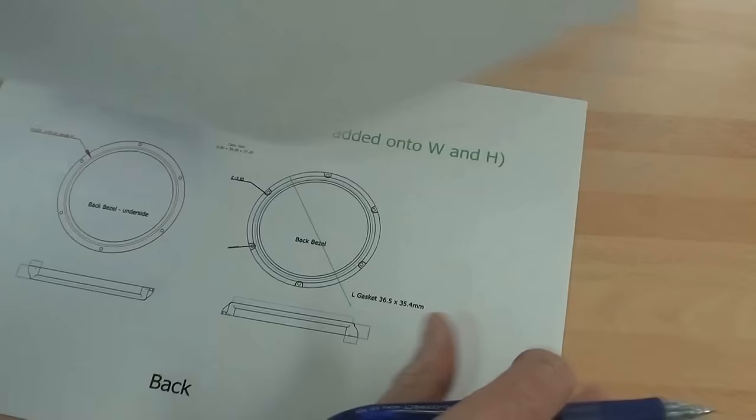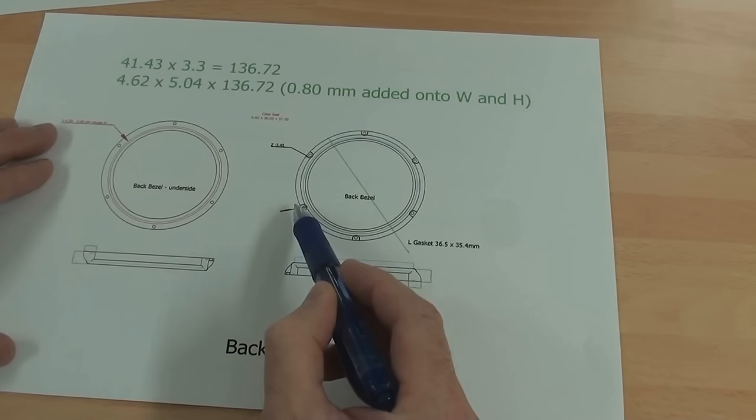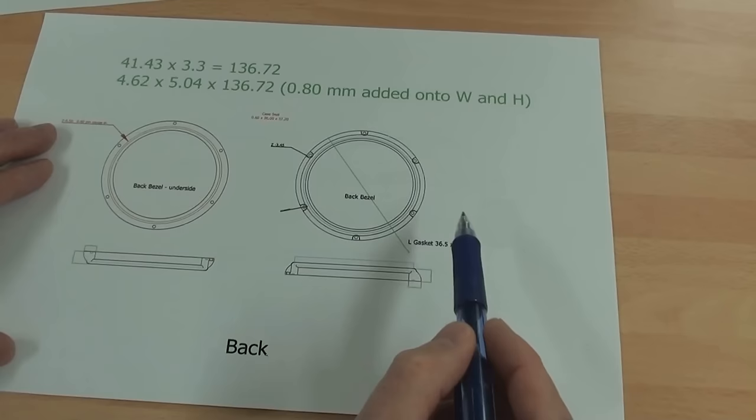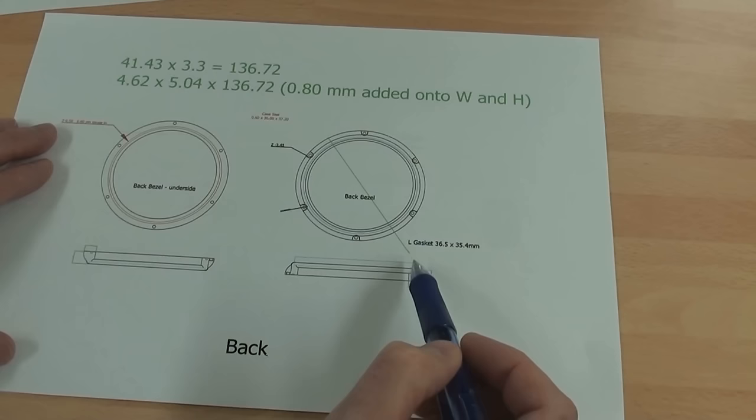The back of the case, again fairly straightforward. The only real difference here is the cutouts for the screw heads. Again, we show the glass seat and seal for the O-ring gasket and then the various clearances.